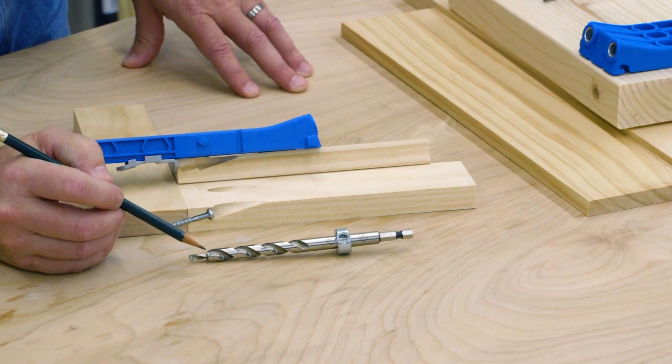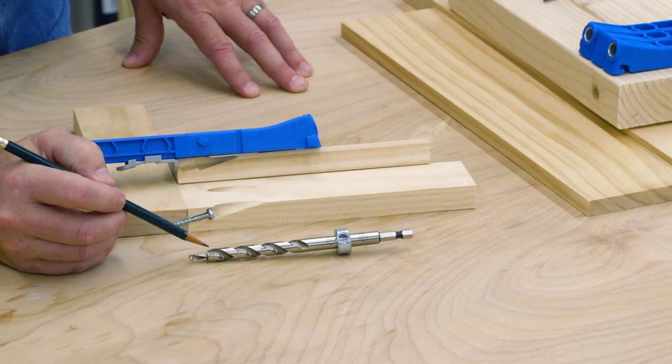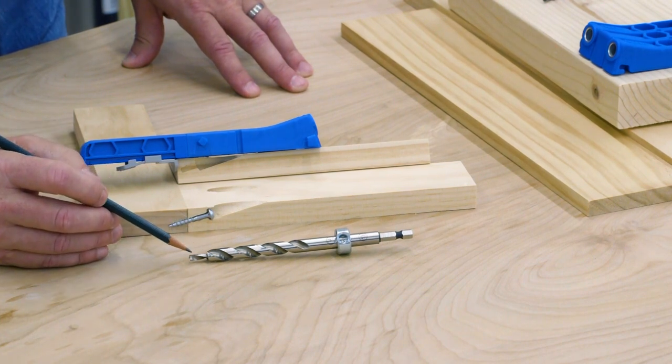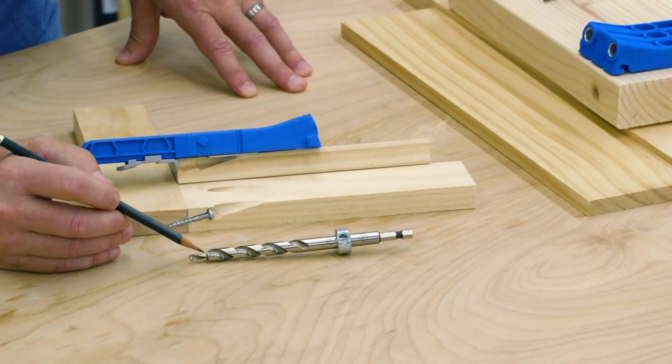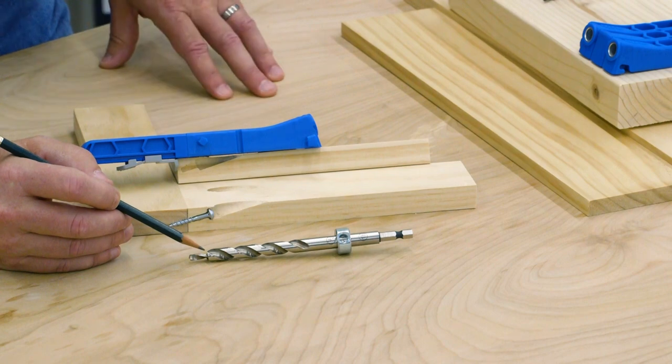The main portion of the bit, the fatter part, creates the pocket. The narrower tip creates a pilot hole for the screw, and the step in between creates a flat ledge at the bottom of the pocket.